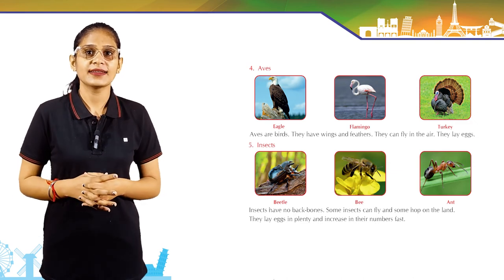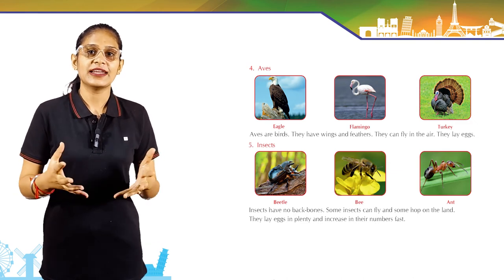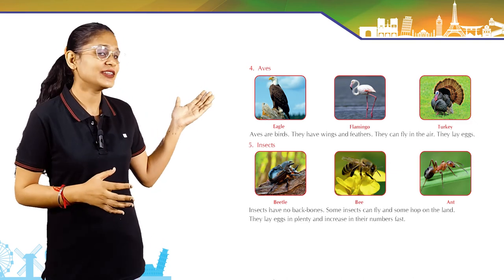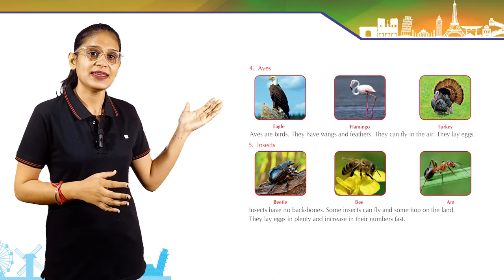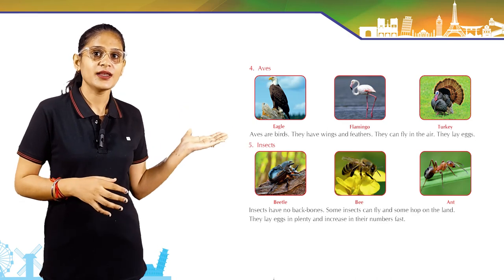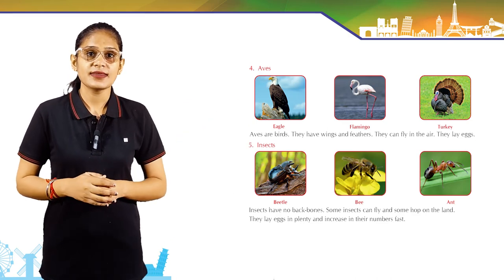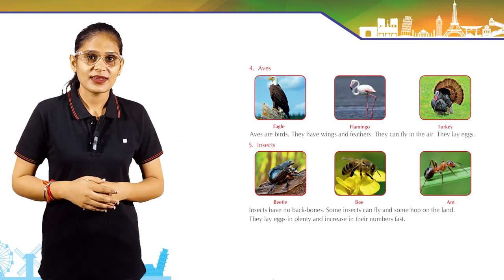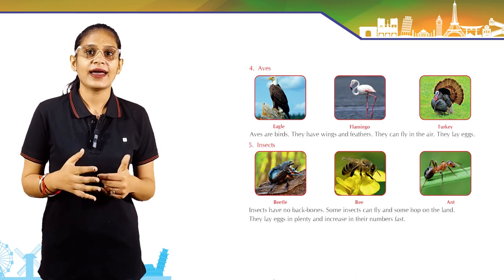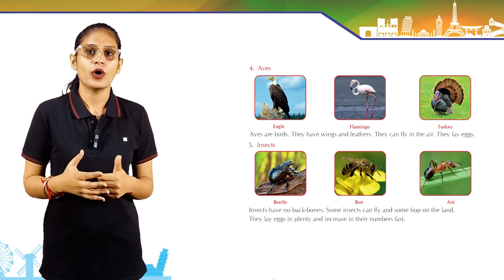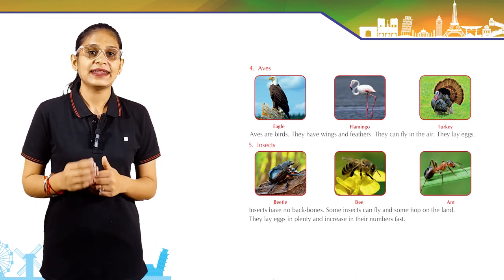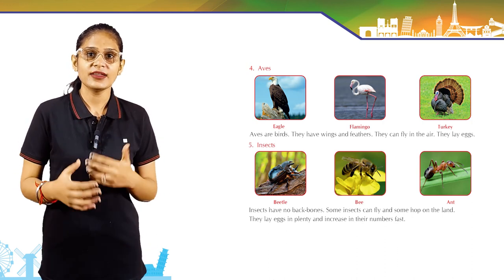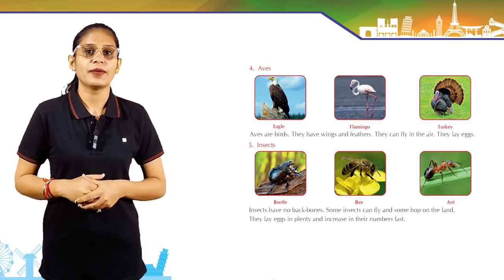Birds can fly in the air and they lay eggs. Now come to the next group — insects: beetle, bee, ant. Insects have no backbone. Some insects can fly and some hop on the land. They lay eggs in plenty and increase in numbers fast.